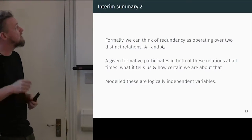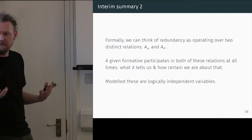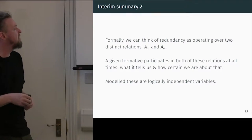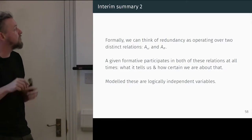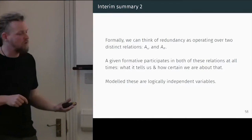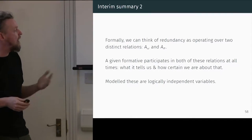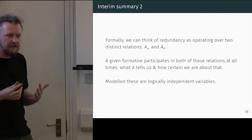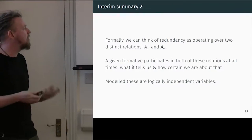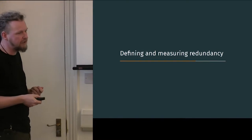To summarise formally: we can think of redundancy as operating over two distinct relations — A-Omega and A-Sigma — contribution and uncertainty. A given formative participates in both of these relations at all times: it tells us what it contributes and how certain we are about that. These two are clearly linked, but they're modelled here as independent variables.